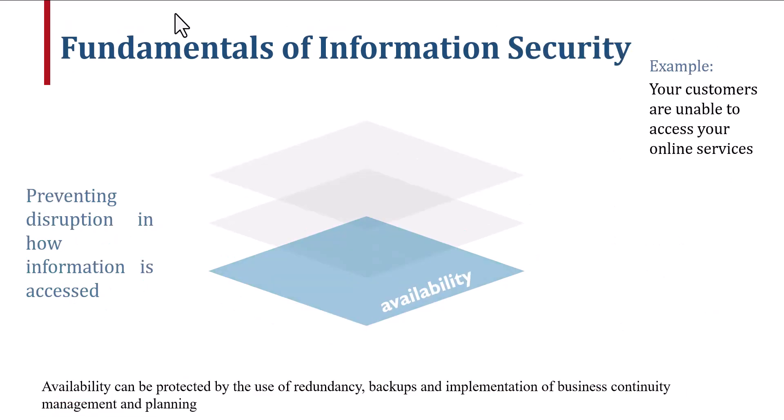Lastly, we have availability. Availability ensures that information is accessible when needed. Redundancy and load balancing help us achieve high availability, reducing downtime risks. For example, your customers are unable to access your online services.